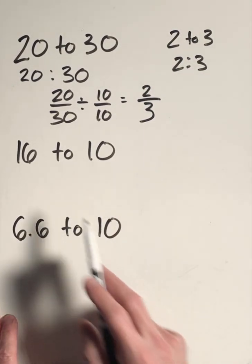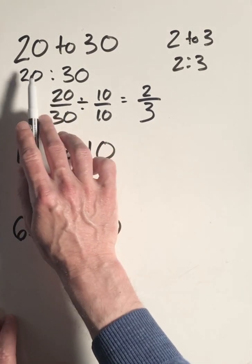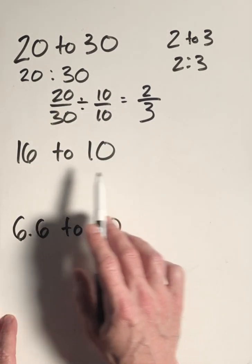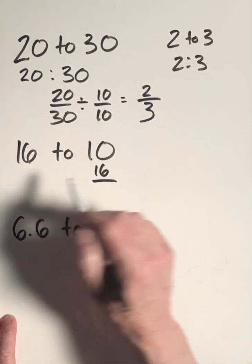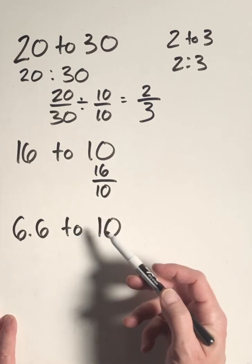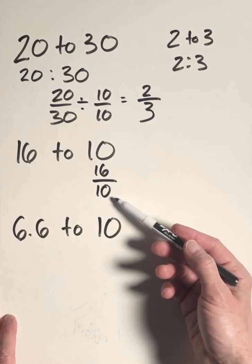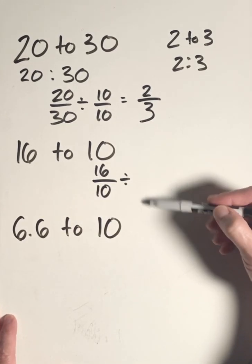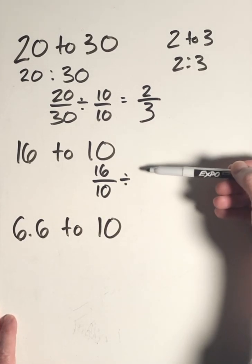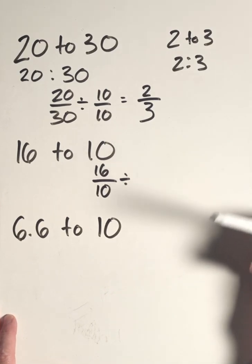We'll do the same thing with 16 to 10. We could have written it 16:10, and we're also going to write it as a fraction. So the first number in the ratio comparison comes first, the second number comes on the bottom as your denominator. We would then divide it by some fraction that's equal to 1 that is made up of common factors between 16 and 10.